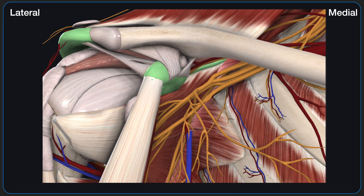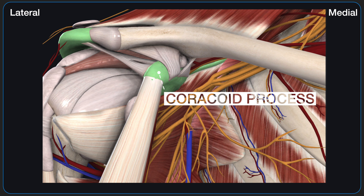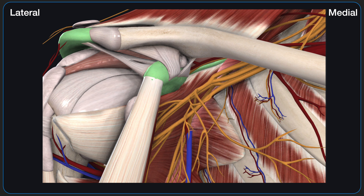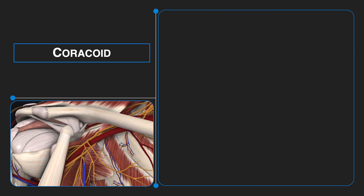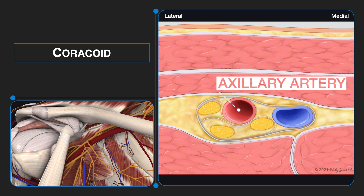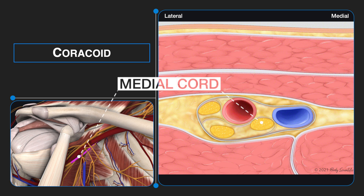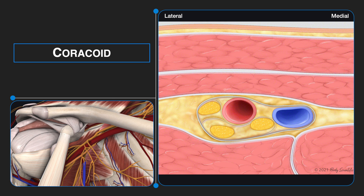To visualize the cords by the coracoid process, the ultrasound transducer is oriented immediately medial to the coracoid process, caudal to the clavicle in the parasagittal plane. Here, the cords are named for their position around the second portion of the axillary artery with the arm in the anatomic position. For example, the medial cord is positioned medial to the axillary artery. This is the area in which the infraclavicular approach to the brachial plexus is most commonly performed.